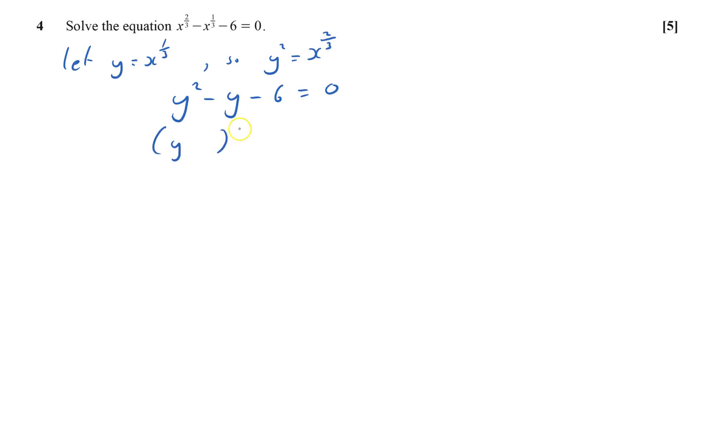Hopefully this is going to factorise. We're doing C1 so it's quite likely to. How do I get 6? I can get 6 with 1 and 6, or 2 and 3. It's negative so one's positive and one's negative. I've got to get minus 1 here so it's pretty obviously going to be 2 and 3. Put in 2 and 3.